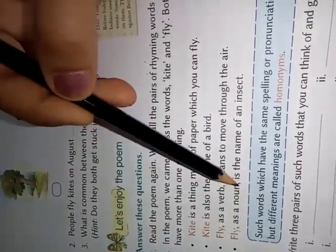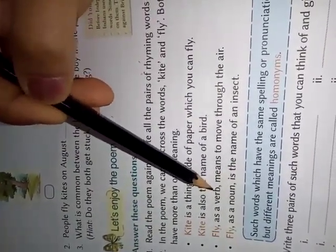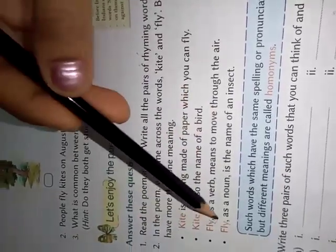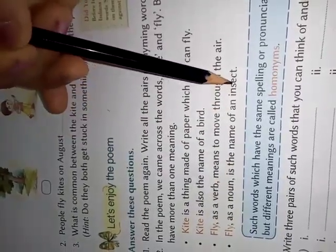Fly as a noun. Agarhom noun ke rup me is ko lye raha hai. Yaha to verb hai. Yaha kama ho raha hai. Means, urd raha hai hawa me. Yaha peh fly as a noun liya hai. Toh it is the name of an insect. Fly ek insect ko bhi kehate hai.